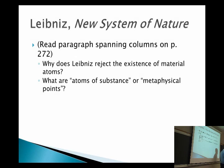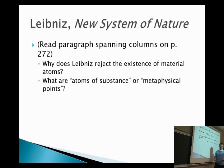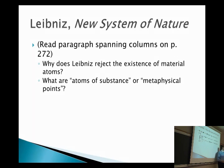So Leibniz said, whatever is the most fundamental constituent of the universe, the most basic kind of thing that exists that has no simpler parts, would have to have no extension to it. It would have to be immaterial. And so that's what he calls in the System of Nature these atoms of substance or metaphysical points. And as you read for this week, the name he ultimately gives these things is monads.